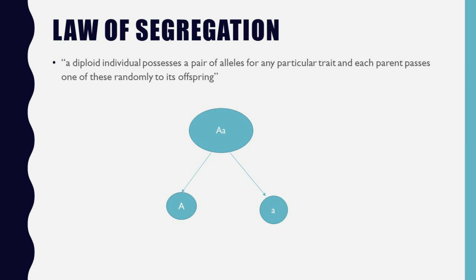As mentioned in the first class, each parent gives you one chromosome. These chromosomes come together to form what we call homologous chromosomes — homologous pairs of chromosomes. For chromosome one in your body, you have one chromosome from your mother and one from your father, and these two work together to form your genetic makeup for chromosome one. This repeats from chromosome two all the way to chromosome 22, before you have the sex chromosomes. The law of segregation states that a diploid individual possesses a pair of alleles for any particular trait, and each parent passes one of these randomly to the offspring.